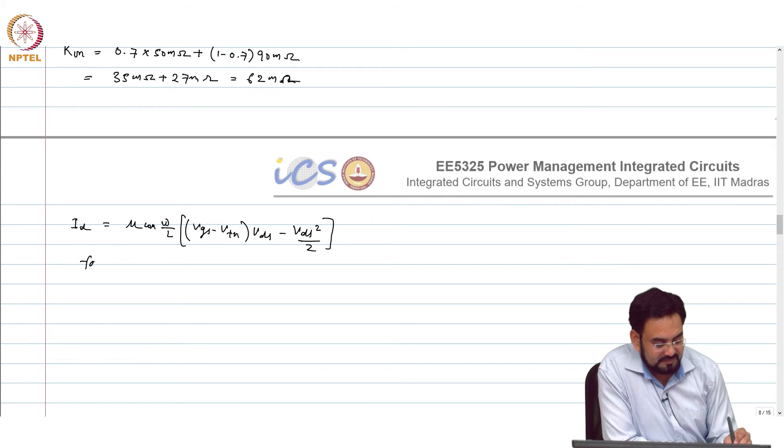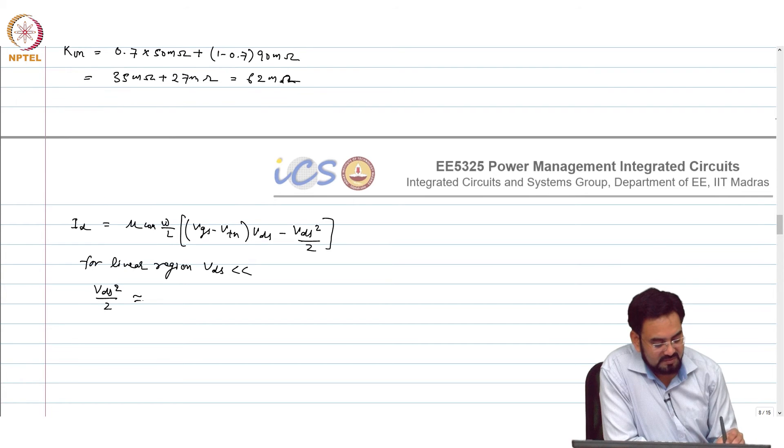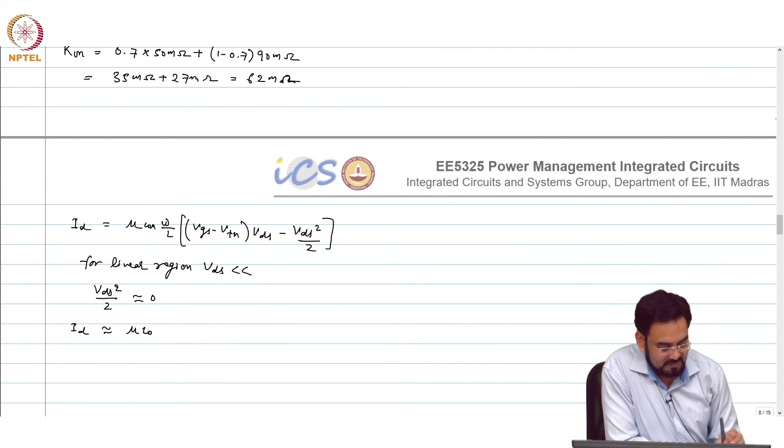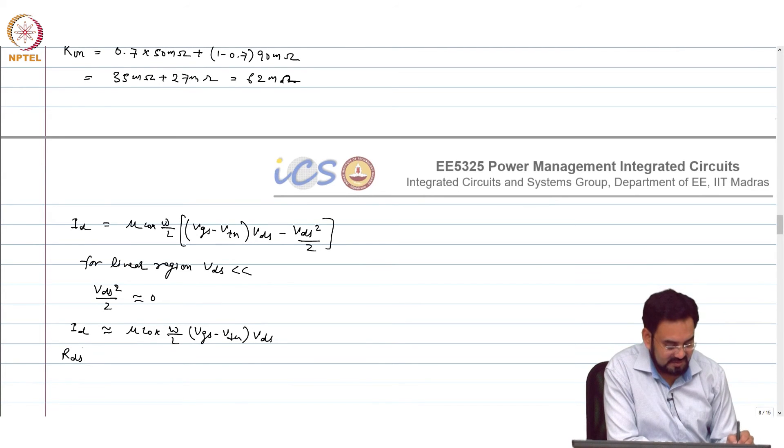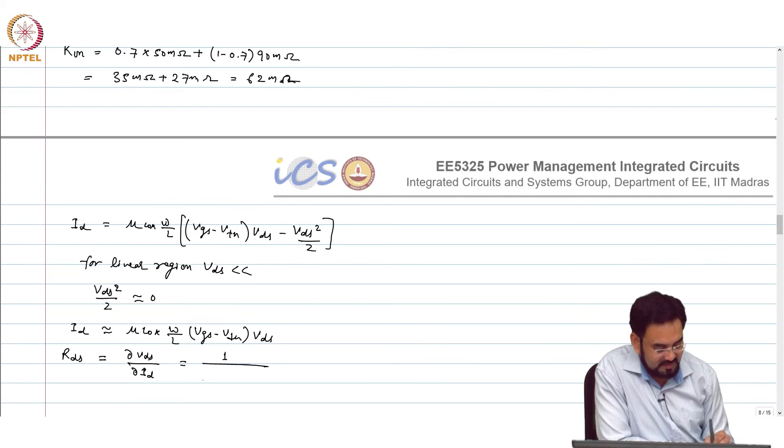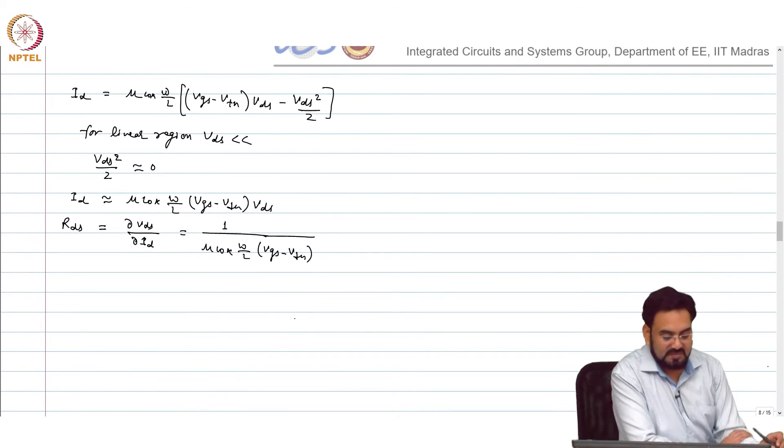So for triode region or linear region, V_ds is much much small. So V_ds squared by 2 is approaching 0. So we can neglect that square term. So your I_d is nothing but mu C_ox W/L times (V_gs minus V_th). So your R_ds is also, R_ds is delta V_ds over delta I_d. So differentiate it and what you get: 1 over mu C_ox W/L times (V_gs minus V_th), and this is nothing but your overdrive.